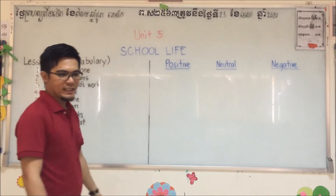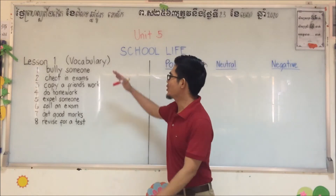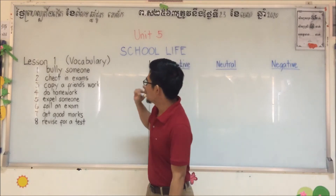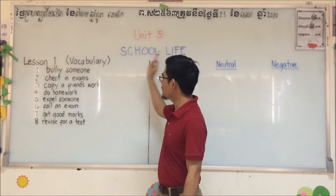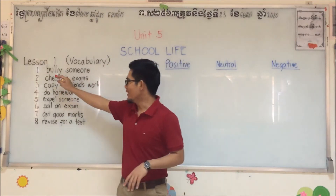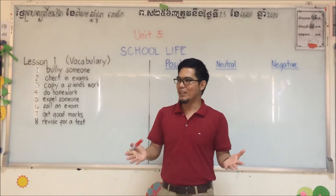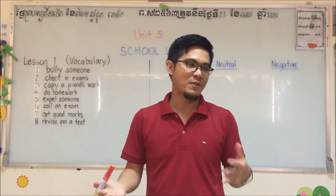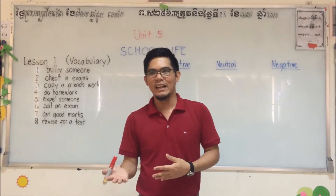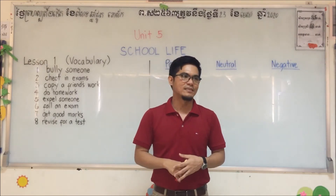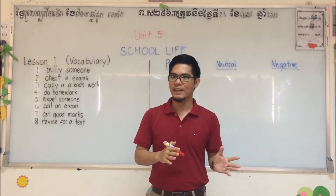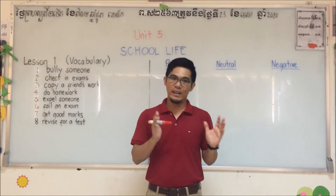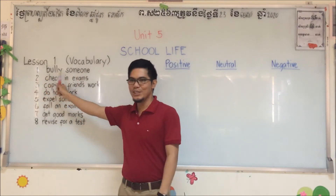Now let's check each school life verb one by one if it's new to you. Number one: bully someone. Bully means you do something — whether a funny thing or not so serious — to someone, but it might hurt that person and it's bad for them. You make fun of someone to the point that it's not okay with him or her. That's bully someone.